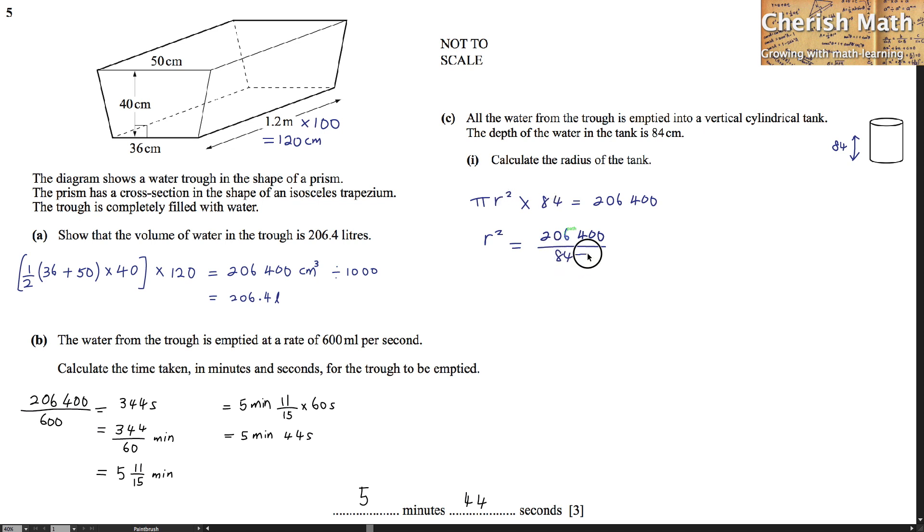Now, the value of r is in fact 206,400 divided by 84 pi, and we have to take the entire value here at its square root. Now, r, we are getting finally here with 28 cm.